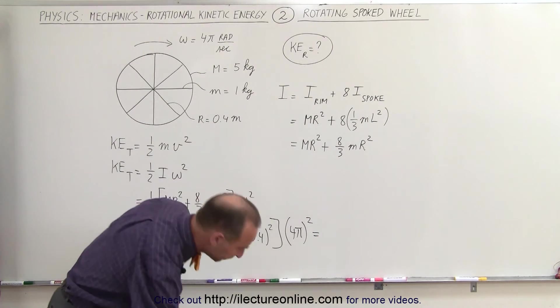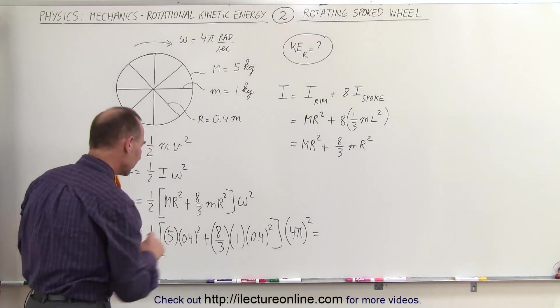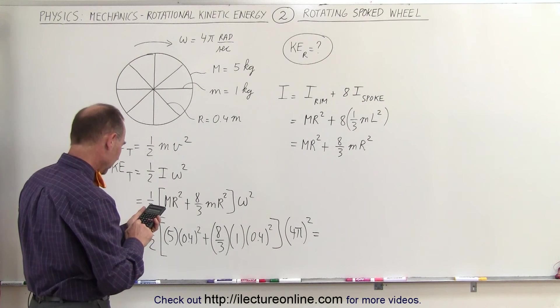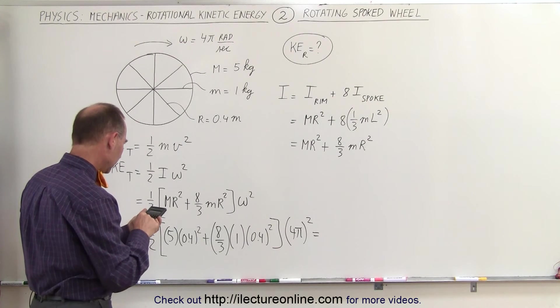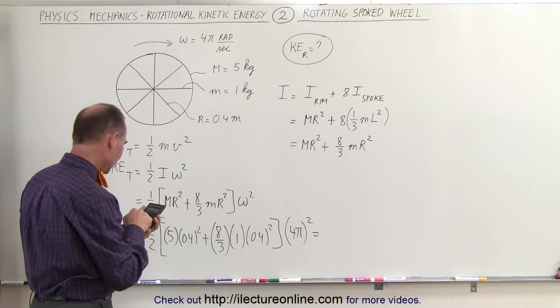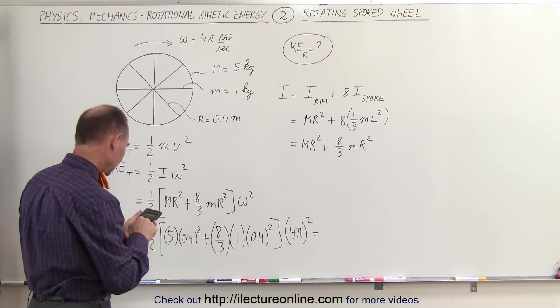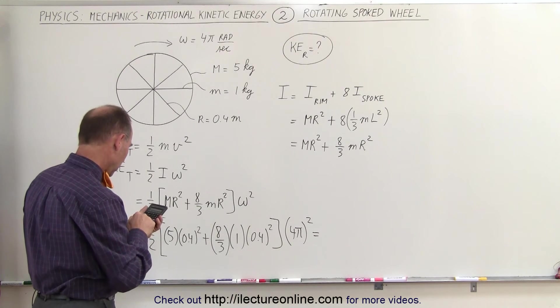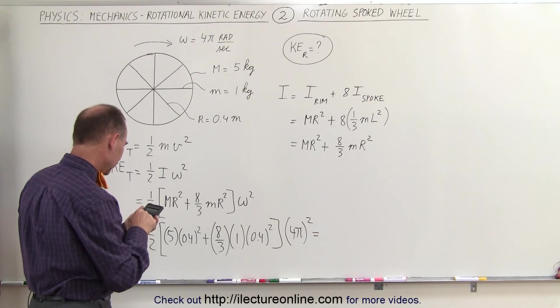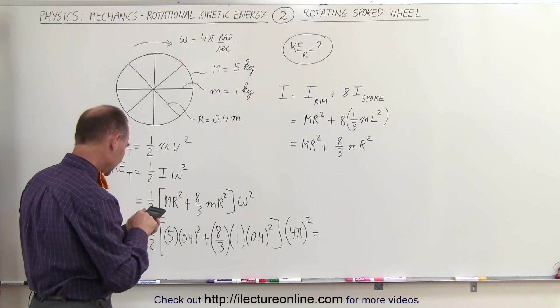So let's see what that is equal to. Working out what's inside the parentheses first, we have 0.4² times 5 plus 0.4² times 8 divided by 3.